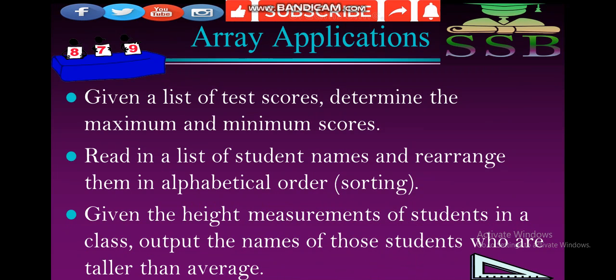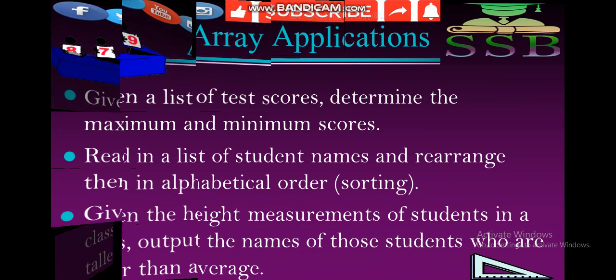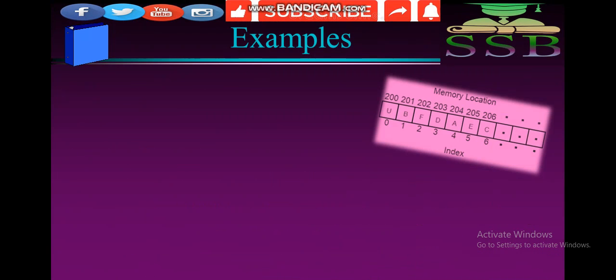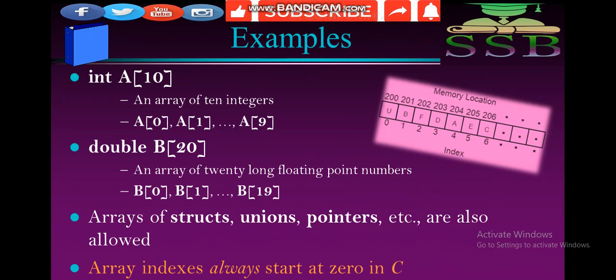This technique is called sorting. Given the height measurements, different students are in the class and we can arrange them according to their height — taller and smaller. In a single database or single object, we can arrange different types of data using different techniques. What are the basic examples we can use as an array?